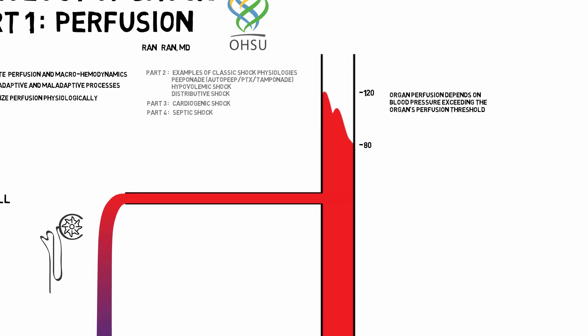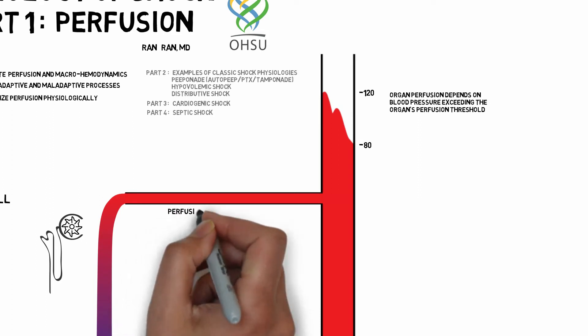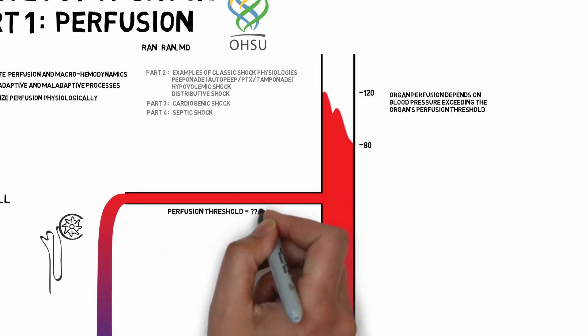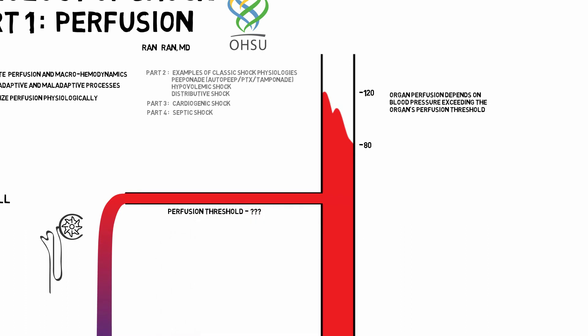However, it's hard to universally define a threshold for hypotension, because a critical perfusion threshold is not easily measured. It varies from person to person, organ to organ, different regions of the same organ, and different physiologic states.